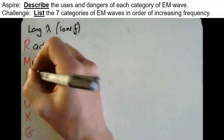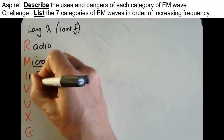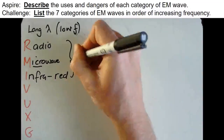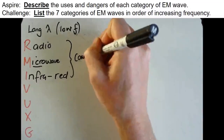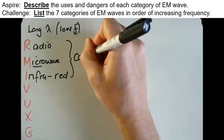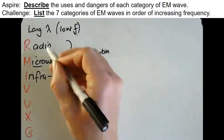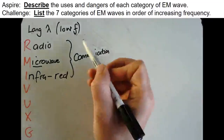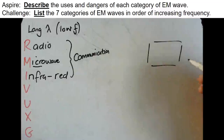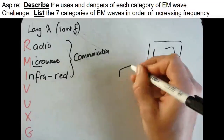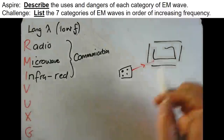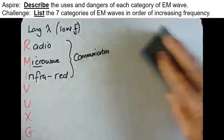Infrared waves are our next category. Infrared is used for communication — we could group radio waves (radio, TV), mobile phones, and infrared (used for remote controls) together under communication. If you want to change the TV channel, you point your remote control at the TV and it sends out a wave in a straight line, transferring information to your TV. So infrared is used in remote controls.